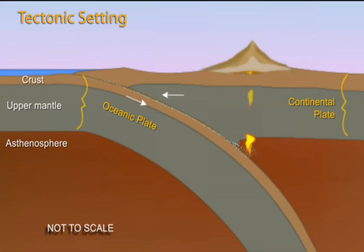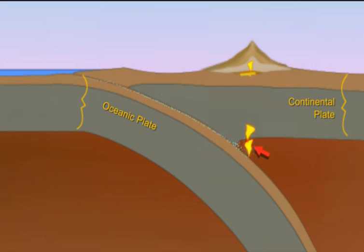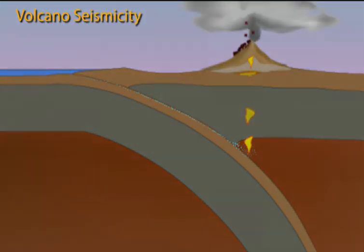These types of volcanoes form where mantle rock located above the subducting plate — not the subducting plate itself — melts to form magma. Melting of the mantle is facilitated by water released from the oceanic plate.